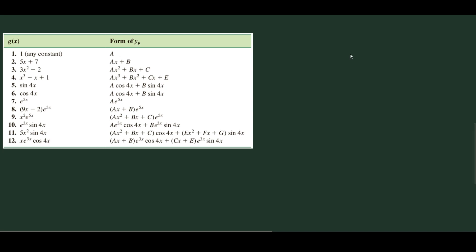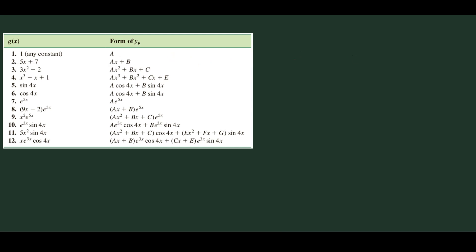For a constant g of x, you can just write any arbitrary letter. For the second one, we have 5x plus 7, which is a linear function, so the form is ax plus b. Now if we only have 5x, we should still write ax plus b because that is the general form — you can also write 5x as 5x plus 0, so it's the same thing.